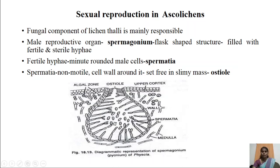The fertile hyphae cut down a number of minute, rounded male cells called spermatia. Spermatia are non-motile in nature, surrounded by a thin cell wall, and set free into the cavity of the spermogonium, which is filled with mucilaginous substances. Through this slimy mucilaginous mass, the spermatia come out from the lichen thallus through a small opening called the ostiole.